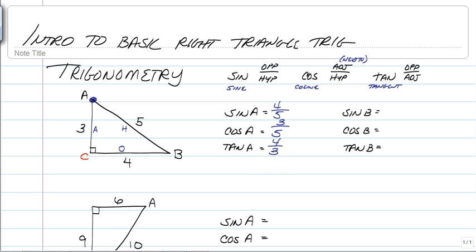So sine, cosine, and tangent are just ratios of sides. Now for this next example, or basically the same example, next thing we're doing, though, is we are going to switch which angle we are standing on. So now we're going to imagine we're standing on angle B.